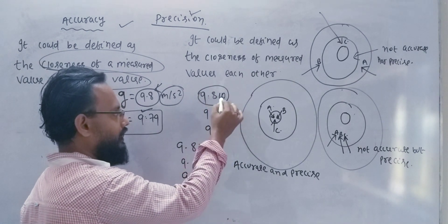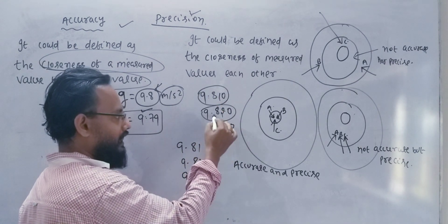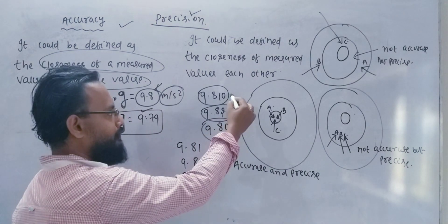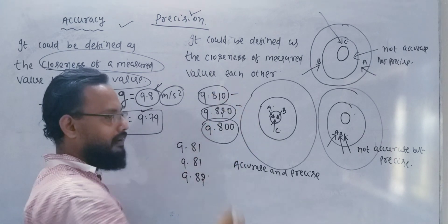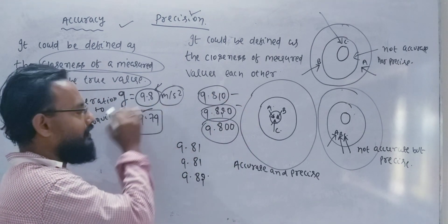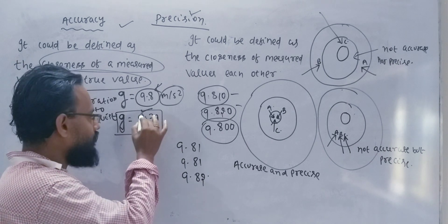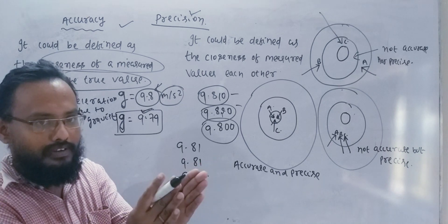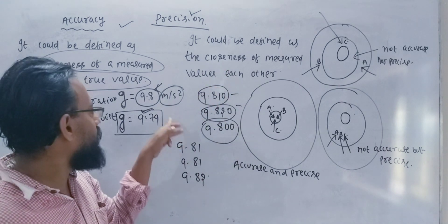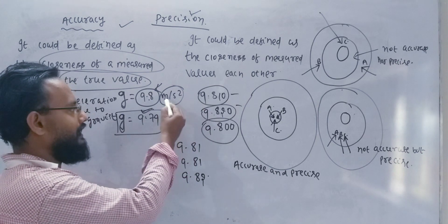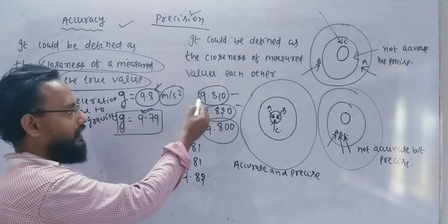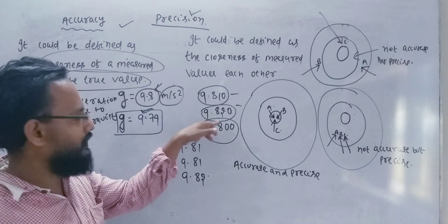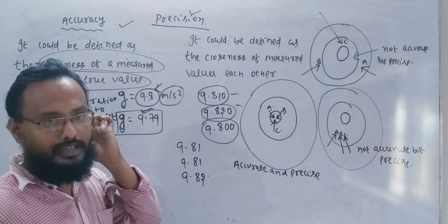In the next experiment, the student gets 9.810, and the next gives 9.820. So we examine precision here — the values 9.810 and 9.820 are very close to each other, so they are precise. But 9.820 is close to the true value of 9.8, so precision may or may not be accurate.